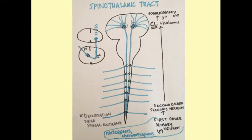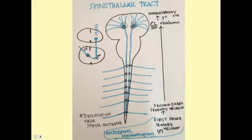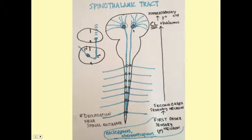The spinothalamic tract is another sensory tract. Like the DCML, it involves three nerves and conveys sensation. However, it differs in that when the nerve enters through the posterior horn, it synapses and crosses right away — it does not wait until the medulla to decussate. From there, the second-order neuron travels up to the contralateral thalamus, synapses again, and then travels to the somatosensory cortex. The spinothalamic tract is responsible for relaying temperature, pain, and crude touch.